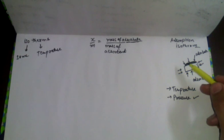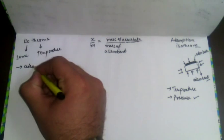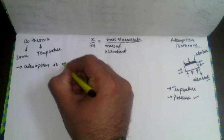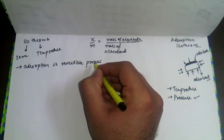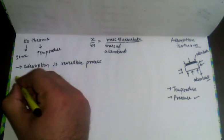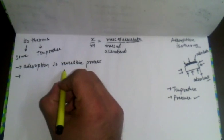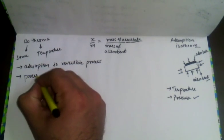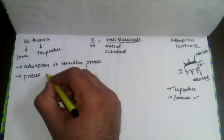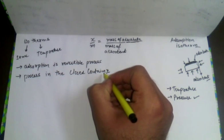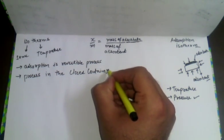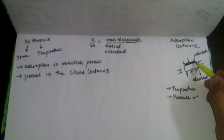Remember that adsorption is a reversible process. The adsorbate and adsorbent are both in a closed container — this is the most important point, otherwise the process will never be reversible in nature. When this process happens in a closed container, a stage is reached when the amount of gas adsorbed is equal to the amount of gas desorbed.